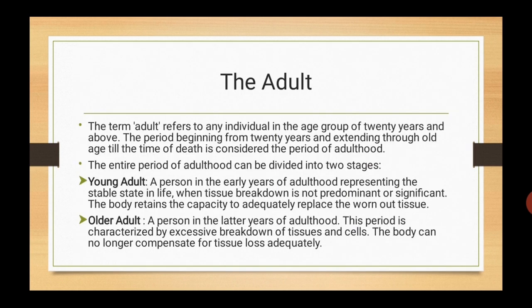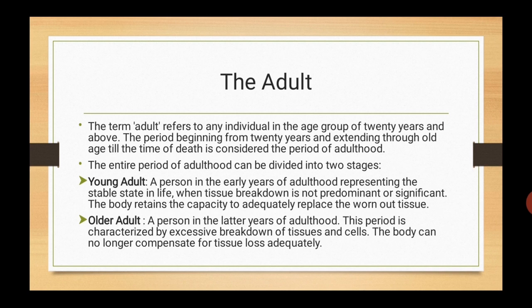In this unit, we will learn about meal planning for adults. The term adult refers to an individual in the age group of 20 years and above, beginning from 20 years and extending through old age till the time of death. The entire period of adulthood can be divided into two stages. First is young adult — a person in the early years of adulthood representing a stable state in life, where tissue breakdown is not predominant and the body retains capacity to adequately replace worn-out tissue. Second is older adult — a person in the later years of adulthood, characterized by excessive breakdown of tissues and cells, where the body can no longer compensate for tissue loss adequately.